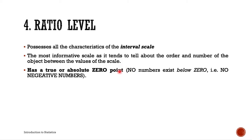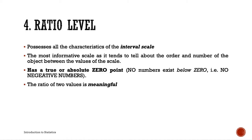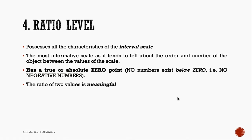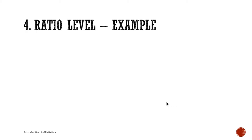The ratio level has a true or absolute zero. When you say zero in the ratio level, it indicates the complete absence of the property being measured. No numbers exist below zero, meaning there are no negative numbers in this context. Also, the ratio of two values is meaningful — for example, one object can be twice as long as another (1:2) or three times as long (1:3).